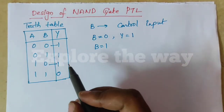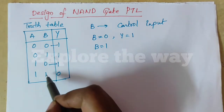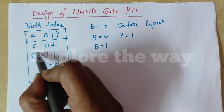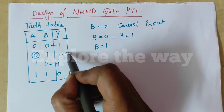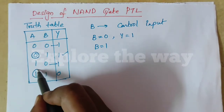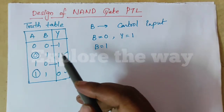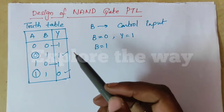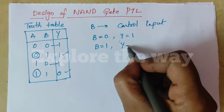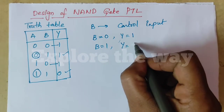In the second case, when B equals 1: if A is 0, Y is 1; if A is 1, Y is 0. So Y equals the complement of A, i.e., A bar.